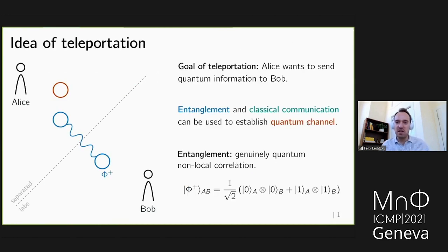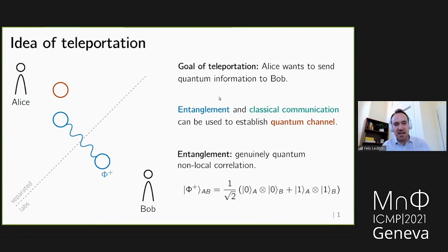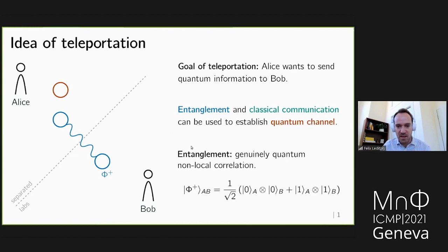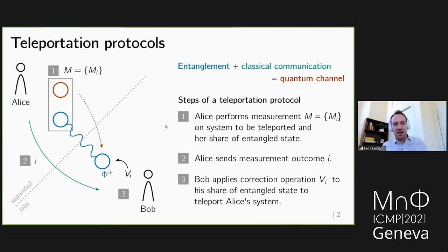First, a bit about general teleportation protocols. The idea is that two quantum parties, Alice and Bob, who are separated, use shared entanglement and classical communication to send quantum information from Alice to Bob. Teleportation works when the two parties share entanglement and can use classical communication; together these resources establish a quantum channel. Entanglement is a quantum non-local correlation — for example, a maximally entangled state between two qubits.